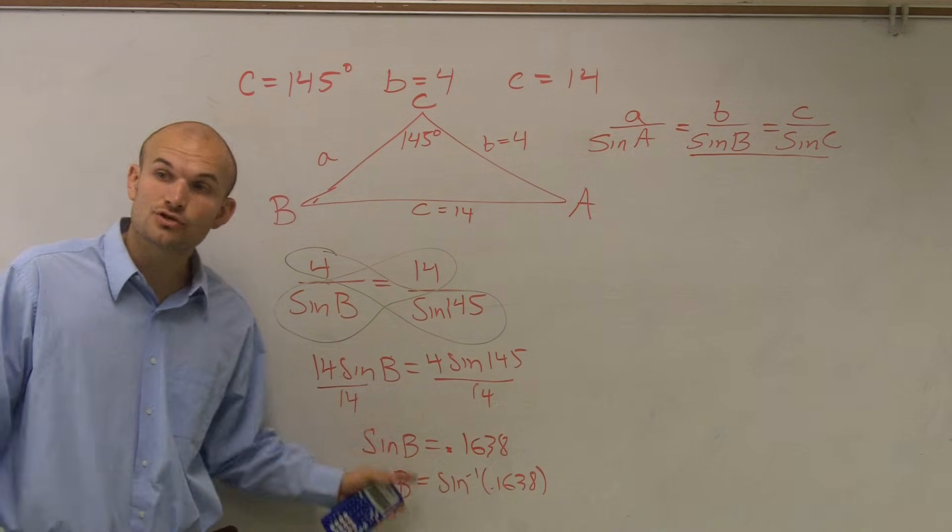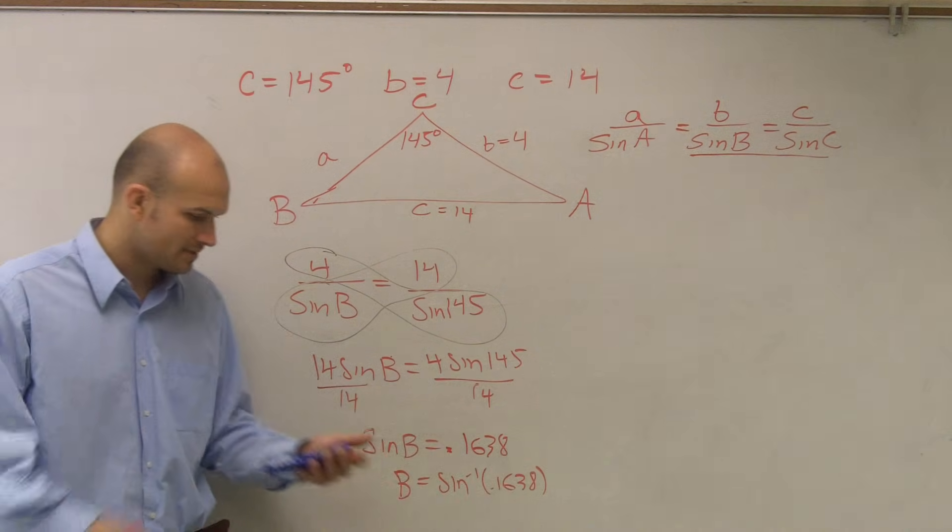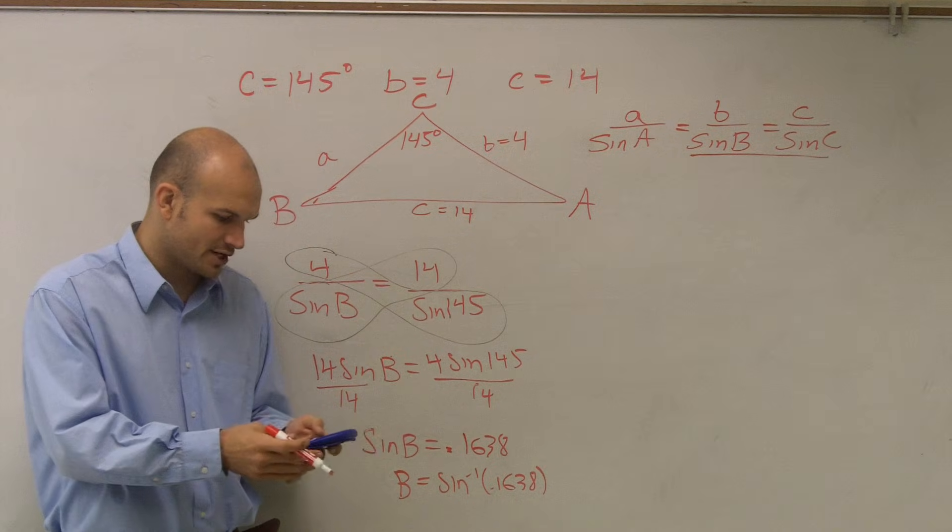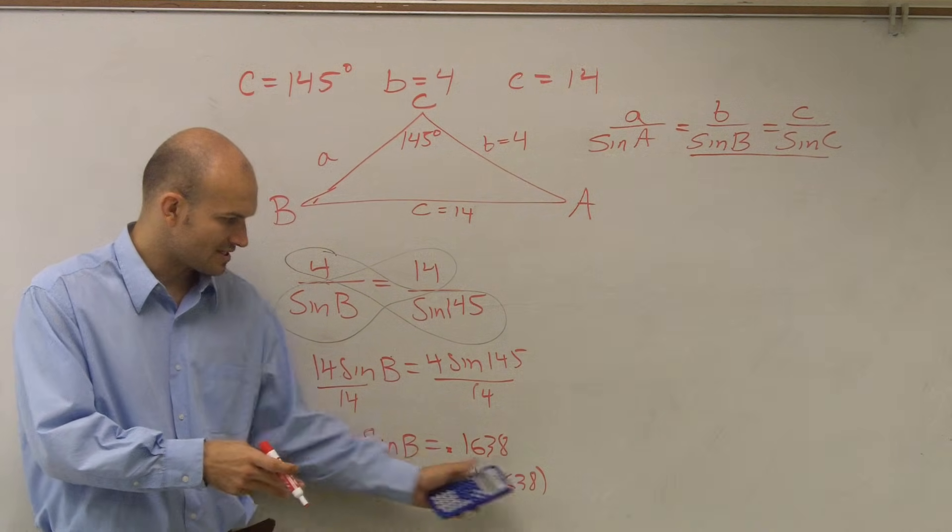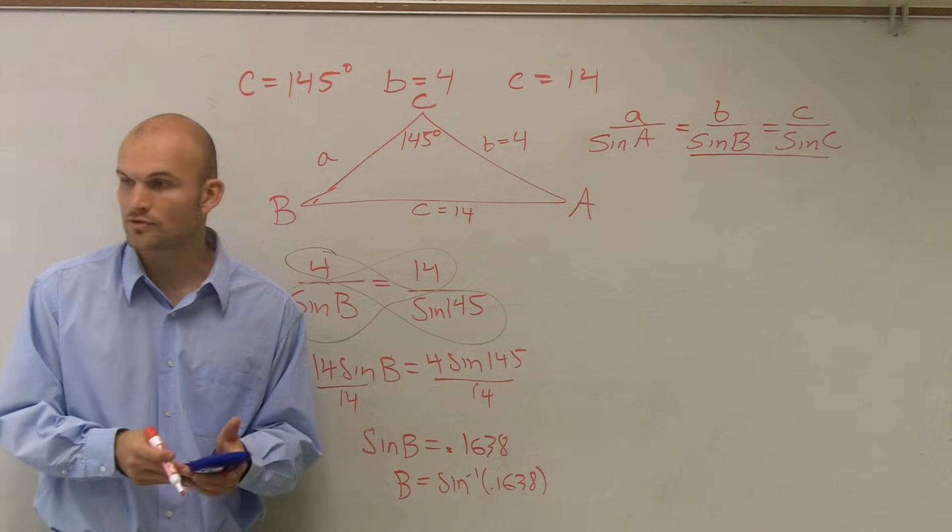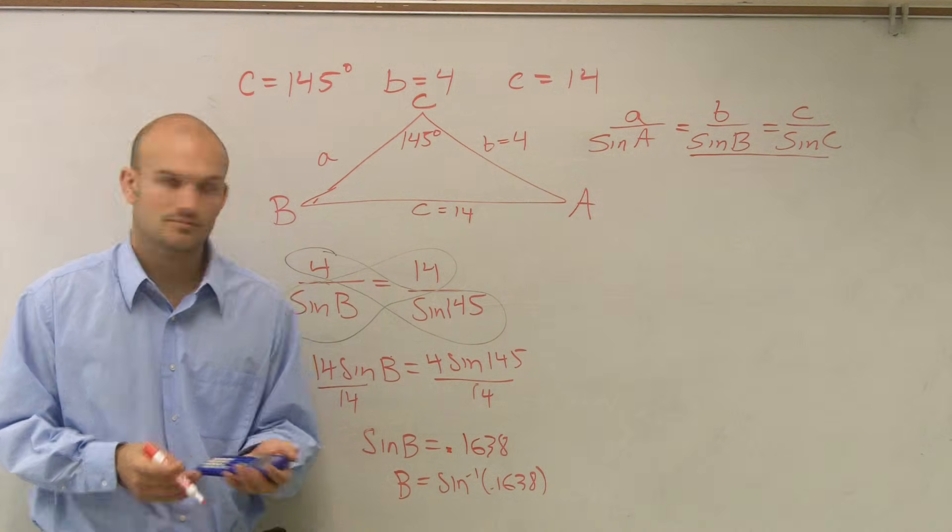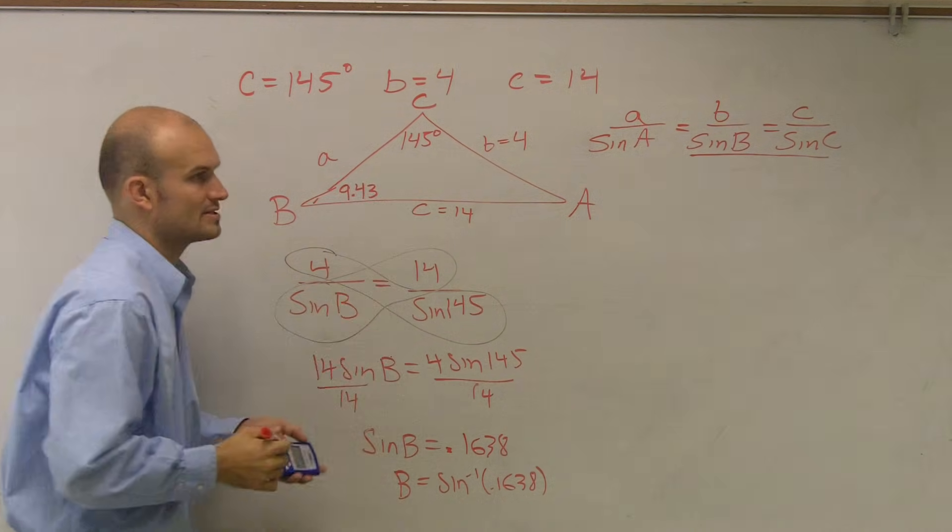So I need to undo the sine. So I need to use the inverse operation of sine, which is inverse sine. So all I'll do is I'll leave my answer here. I'm going to say inverse sine of second answer, which is this exact answer, provides me with 9.43 when I round it. So B is equal to 9.43 degrees.